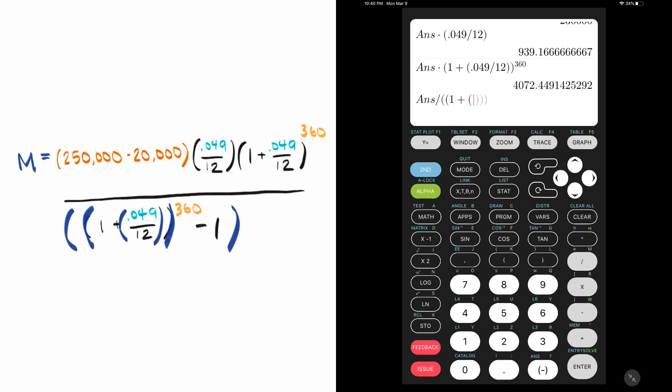One plus another open parentheses for 0.049 divided by 12, then one closed parentheses for the division and another closed parentheses to include the plus 1 when taking it to the 360th power using the carat button once more. Then all of this minus 1 will be our entire denominator, so I can close the parentheses here.